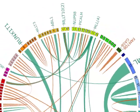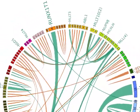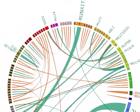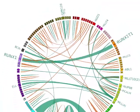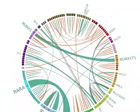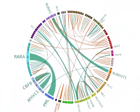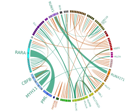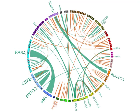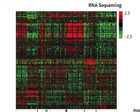In this visualization of gene fusions detected by RNA sequencing, the genes involved are arrayed around the perimeter of the circle. Lines connecting the genes indicate a fusion product between them. The thickness of the line is proportional to the prevalence of the fusion detected.